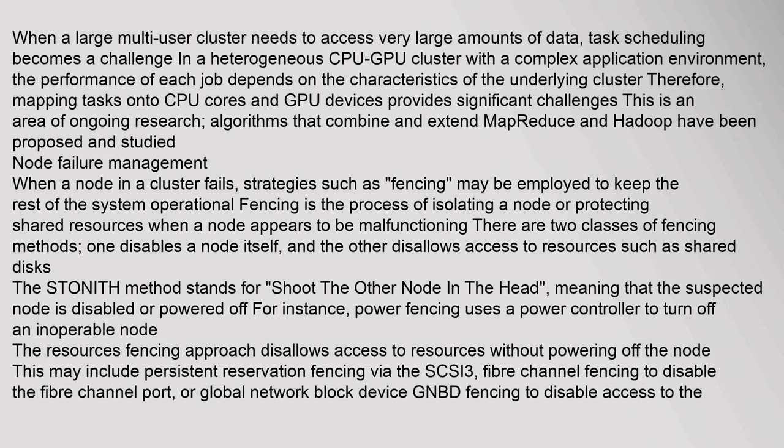When a node in a cluster fails, strategies such as fencing may be employed to keep the rest of the system operational. Fencing is the process of isolating a node or protecting shared resources when a node appears to be malfunctioning. There are two classes of fencing methods: one disables a node itself, and the other disallows access to resources such as shared disks. The STONITH method (Shoot The Other Node In The Head) means the suspected node is disabled or powered off. Power fencing uses a power controller to turn off an inoperable node. The resources fencing approach includes persistent reservation fencing via SCSI 3, fiber channel fencing to disable the fiber channel port, and GNBD fencing to disable access to GNBD servers.